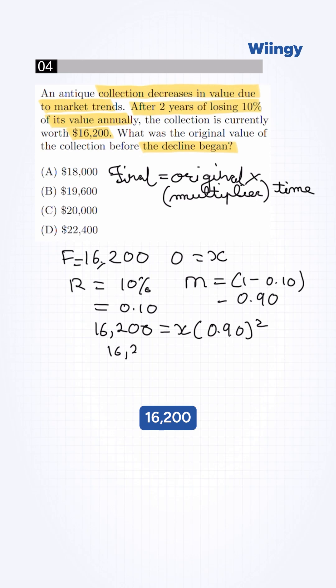this will be 16,200 equals 0.81x. We need to isolate the x, so x will be 16,200 divided by 0.81, which is basically 20,000.